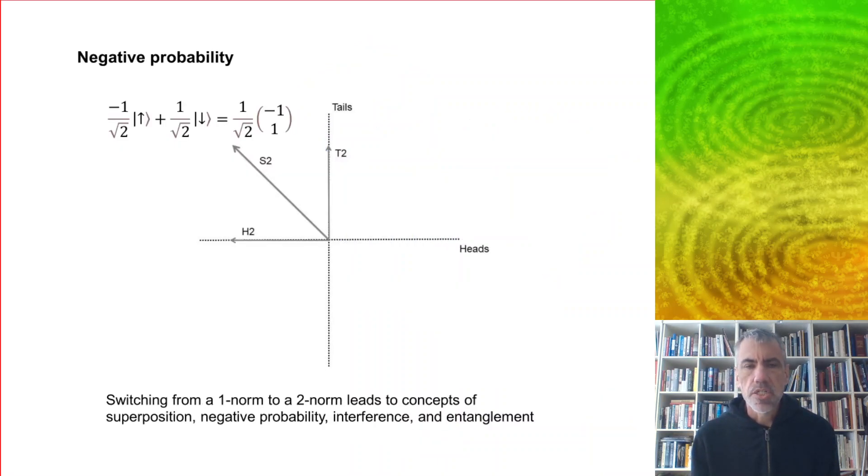So making this change from a one norm to a two norm leads to all these different quantum concepts, such as superposition, negative probability, interference, and entanglement. So what does it mean negative probability? Well, if we just sort of flip our state over, then now we've got a negative probability for heads. The size of the probability, when we take the norm, we're squaring it, so that's obviously positive again. So nothing has really changed, except that when we add probabilities together, we can get a plus and a minus and canceling out. These are called interference effects.